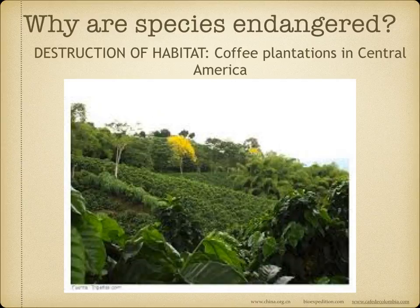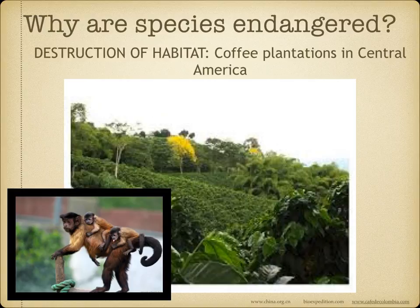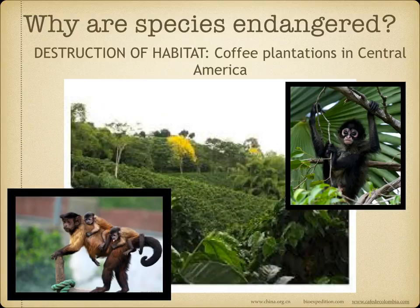These fragmented patches cannot support a species. For example, in Central America, the spider monkey and tufted capuchin have large ranges, so when fragmentation occurs, they are the first to disappear.